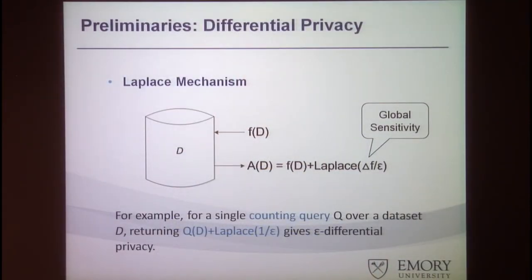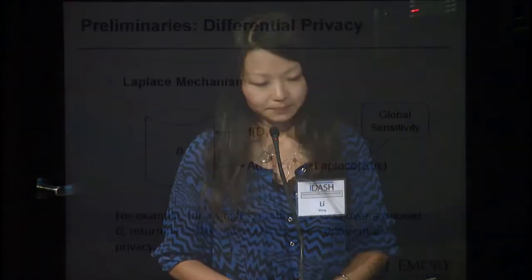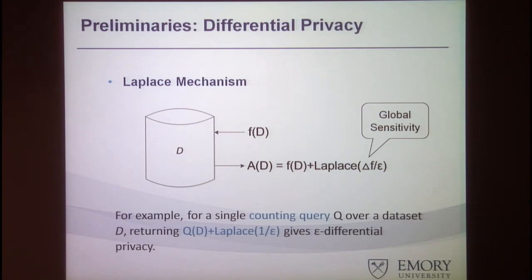A common mechanism to achieve differential privacy is the Laplace mechanism. Given any function, such as a count query — the number of patients within a certain age group — given the original answer F from D, we add Laplace noise to the original answer. This Laplace noise is calibrated based on epsilon, the privacy level, and the global sensitivity of the function — defined as the maximum difference between two neighboring databases for that function, reflecting the impact of any individual on the function. For a count query, the sensitivity is just one. The lower the epsilon, the higher the noise; the higher the epsilon, the lower the noise.